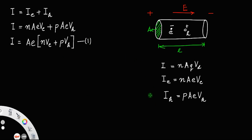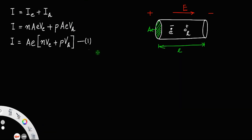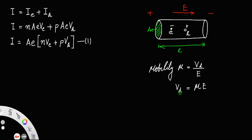Now by the definition of mobility: mobility μ is the ratio of drift velocity to the applied electric field E. So the drift velocity V_D equals mobility times electric field. Therefore the drift velocity of electrons V_E equals μ_E times E — call this equation 2 — and the drift velocity of holes V_H equals μ_H times E, the electric field being the same for both electrons and holes — call this equation 3.